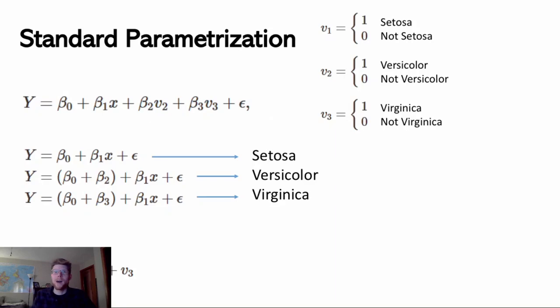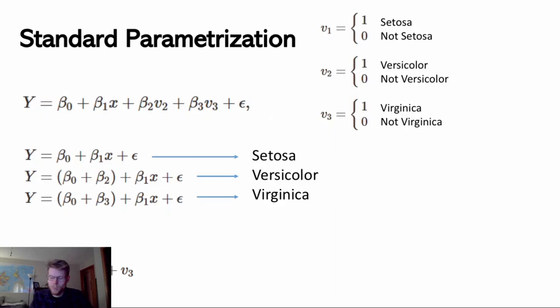We could optionally write the model so that V1, V2, and V3 all show up as variables, but if we did that, we would remove the intercept, because the intercept would now be redundant information — there's no reason to have all four terms. It's really a choice between the intercept standing in for V1, or explicitly including V1 and dropping the intercept. There are mathematical reasons we don't include all four even though we theoretically could, so we choose one of these two parametrizations.